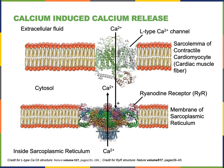Ryanodine receptors are activated through a mechanism known as calcium-induced calcium release. This is where calcium flowing in from the extracellular fluid through the L-type calcium channel activates opening of the ryanodine receptor, which is another calcium channel, but the ryanodine receptor allows calcium to flow into the cytosol from the sarcoplasmic reticulum.